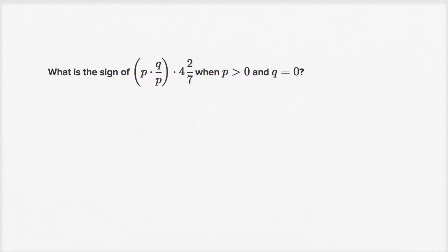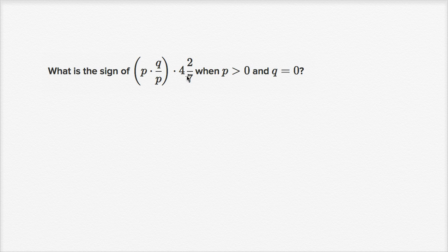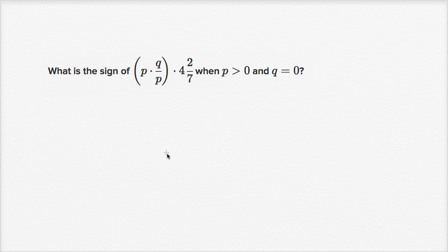What is the sign of p times q over p times 4 and two-sevenths, when p is greater than zero and q is equal to zero? The fact that q is equal to zero should be a big hint — you should be able to do this in less than a second. If you have a bunch of numbers and you multiply them times zero at some point, the whole thing is going to equal zero. I could have a times b times c times d, and if one of those numbers is zero, then the whole product is zero.